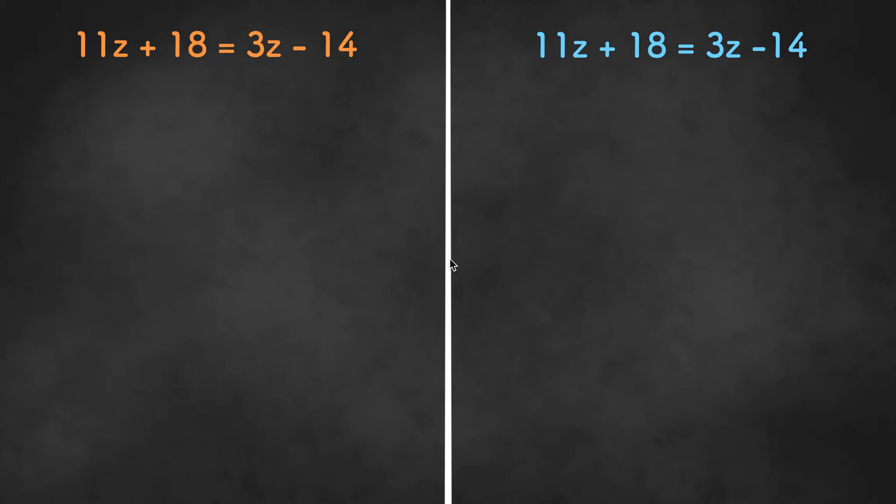When solving equations with variables on both sides, there are multiple methods you can use. In this video we'll show you two of the various ways you can solve these types of equations. The example we'll be using is 11z plus 18 equals 3z minus 14.